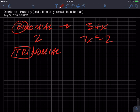What about a trinomial? Look at the prefix tri, right? How many terms do you think it's going to have? Yes, it's going to have three. So x squared minus 3x plus 2 is a trinomial. And what about a monomial?